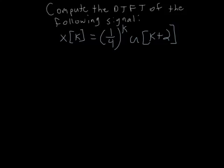In this problem you're given an input signal x, and it is (1/4)^k multiplied by a shifted step function to the right by two.